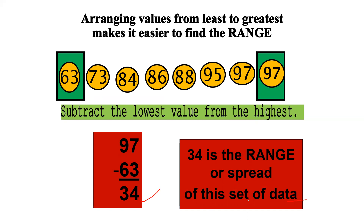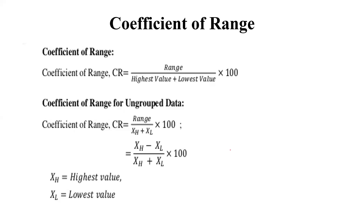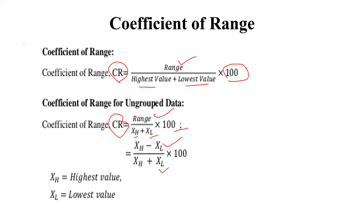But our aim is to find out the coefficient of range. For that, we apply the formula: highest value in the given data set minus lowest value in the given data set, divided by highest value plus lowest value, multiplied by 100. For ungrouped data, the same formula applies — range divided by (highest value plus lowest value), multiplied by 100. In notational format, Xh means the highest value and Xl means the lowest value.